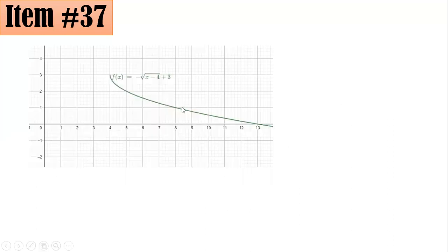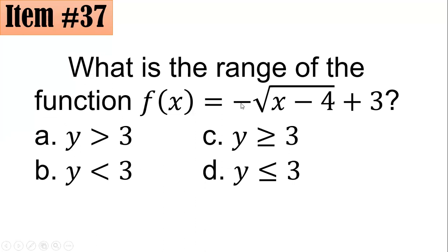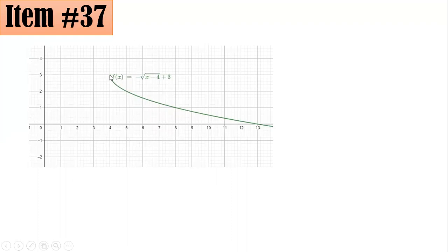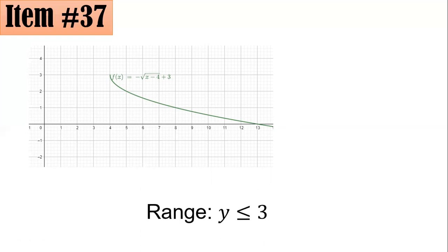With a negative sign in front, the square root function stretches downward. Looking at the graph of f(x) equals negative square root of (x minus 4) plus 3, we can see that 3 is the largest value in the range and everything else is less than it. Hence the range is y less than or equal to 3, letter d.